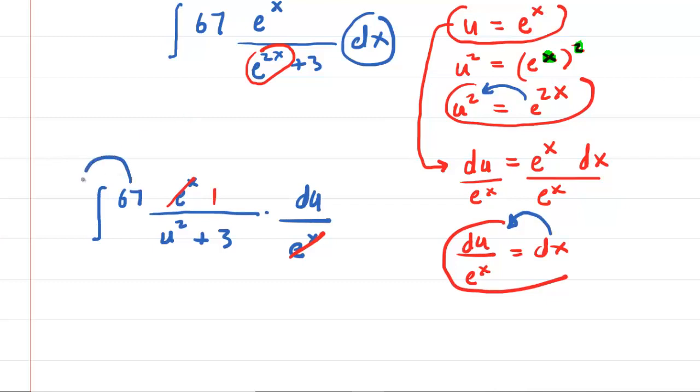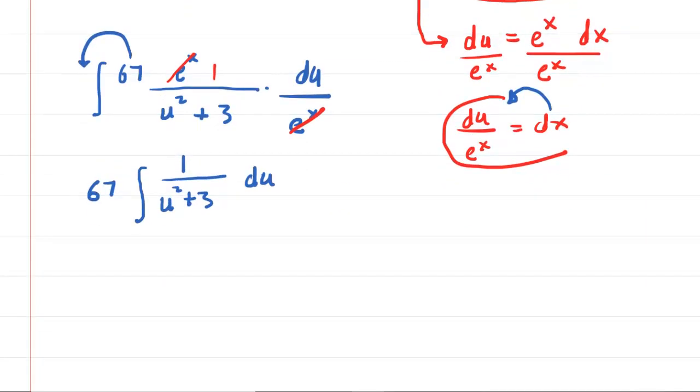We'll factor out the 67. The 67 doesn't even really matter in this problem, so we'll factor it out. We have now 1 over u squared plus 3, and then du. Why is this significant? Well, there is a formula that many of us have learned when learning how to integrate.